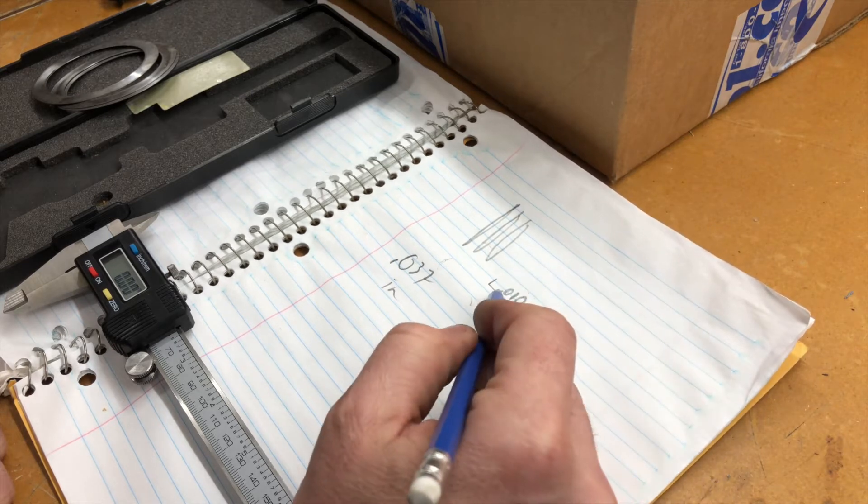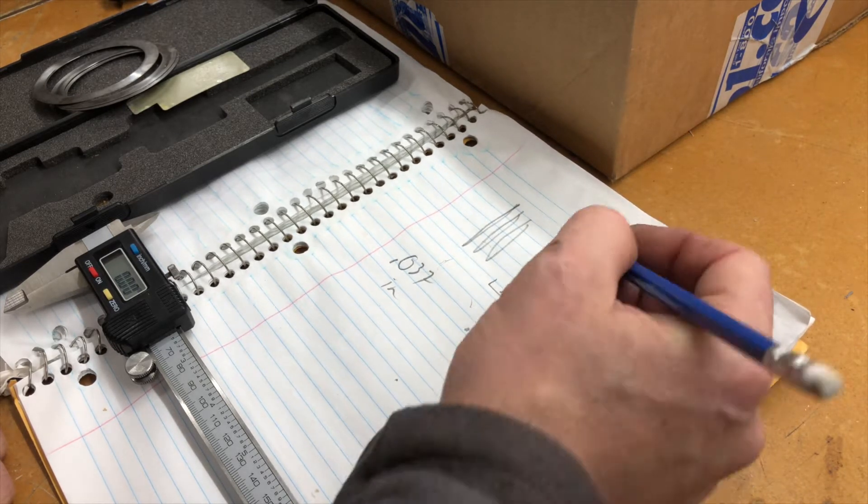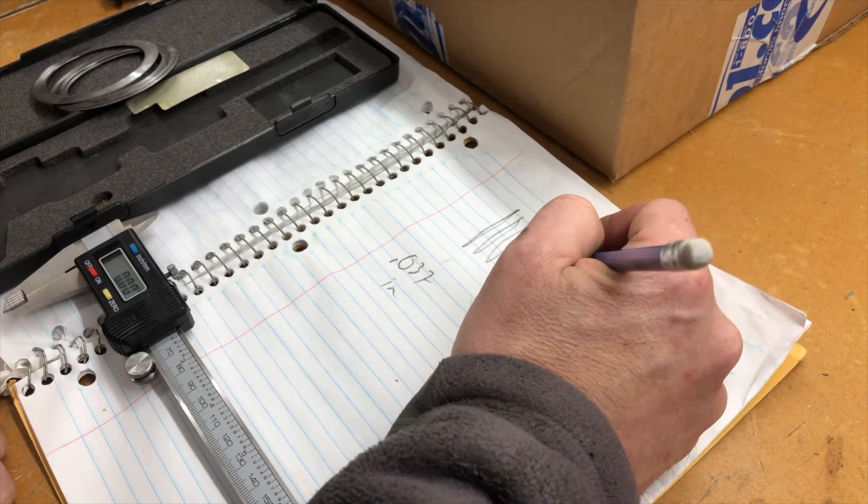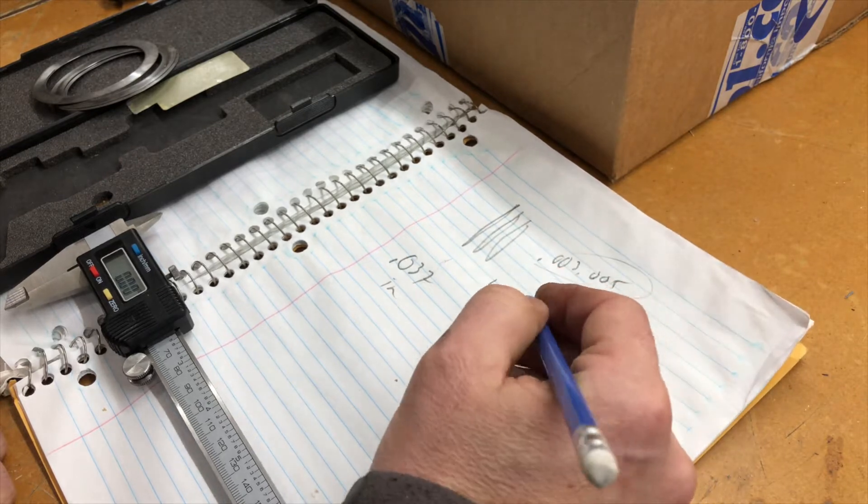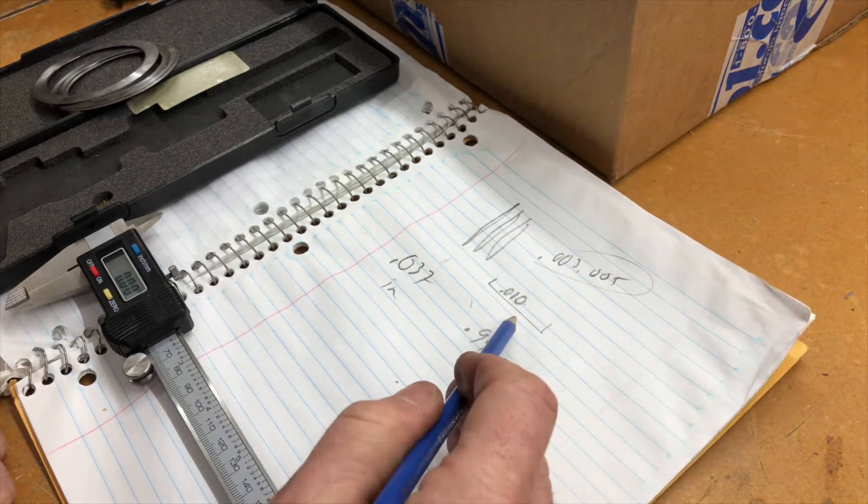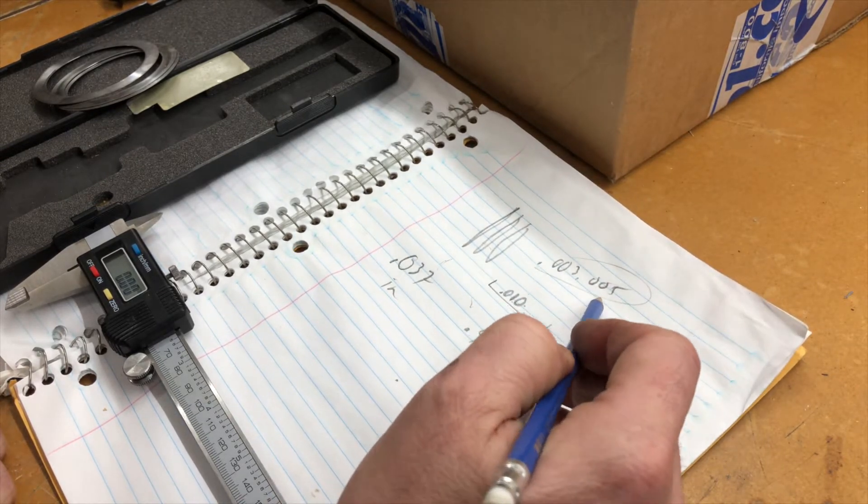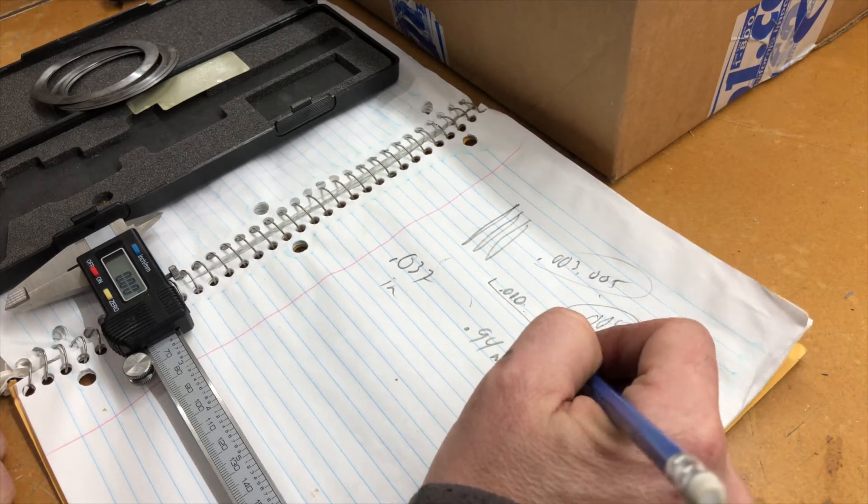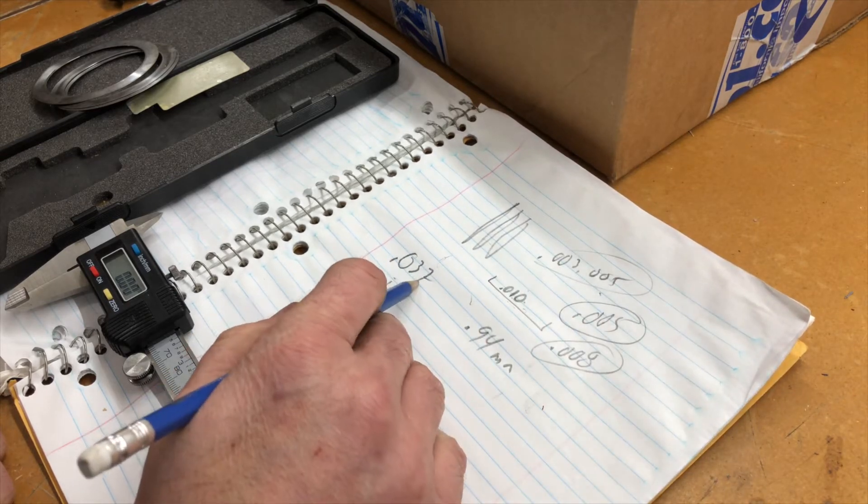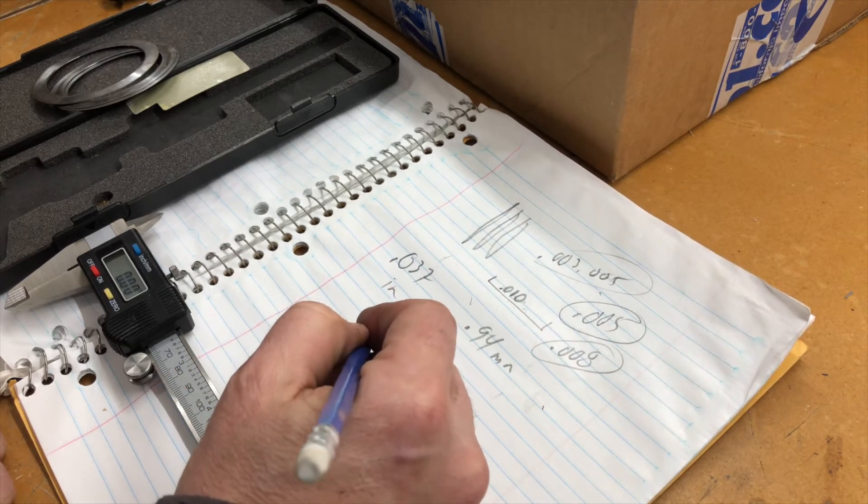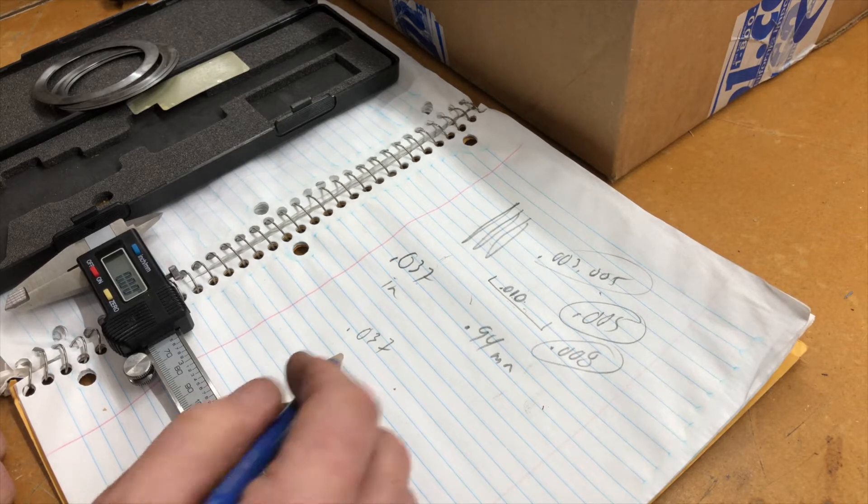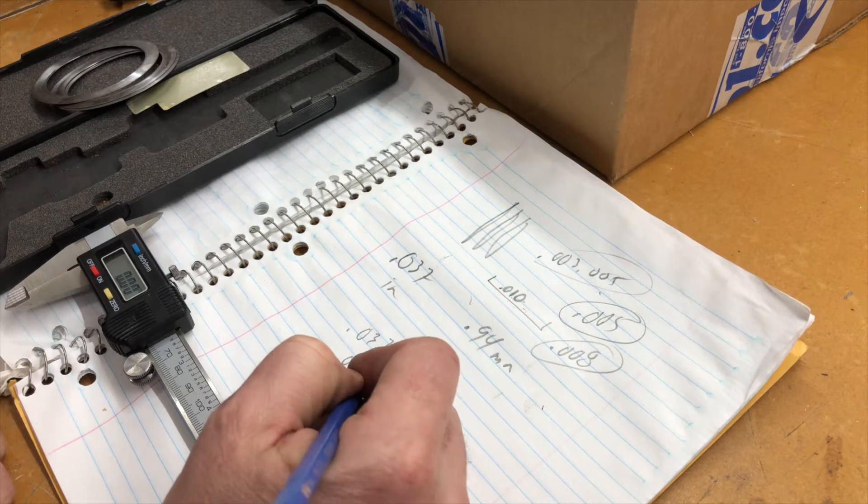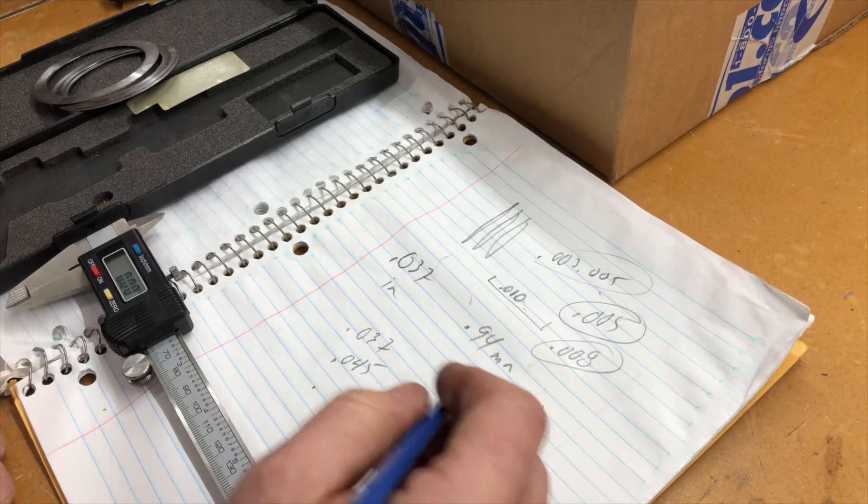We know that the end gap was 10 thousandths, which was way too much. It should be, the factory spec says 0.003 to 0.005. So minimum I've got to add a minimum of 0.005 up to 0.008 in thickness to this. So instead of 0.037, it needs to be if I added 8 it'd be 0.045, or if I added just 5 it'd be 0.042.